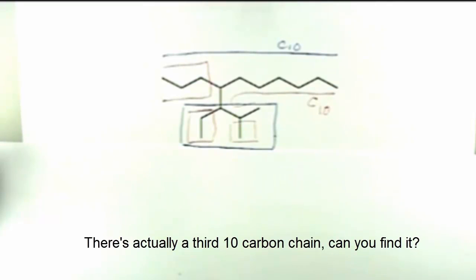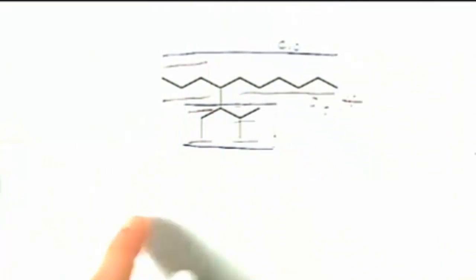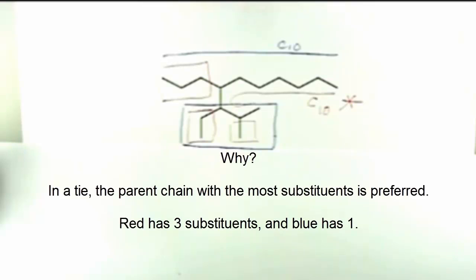So our choices are three side chains with red or one side chain with blue. It's going to be the red one that wins. Then what do we do after that? Now we actually do know which chain we're going to use to name this molecule.